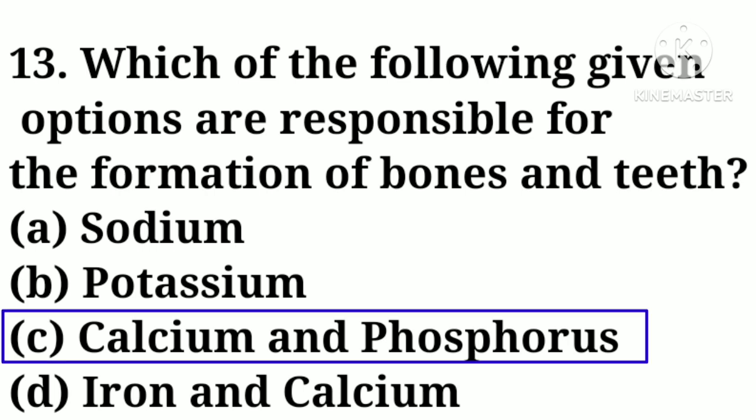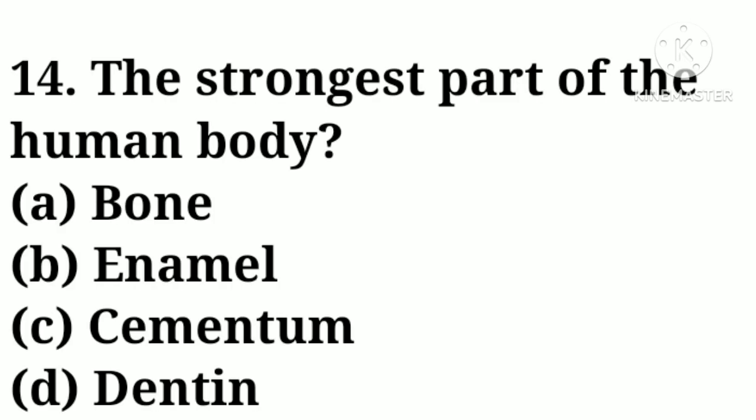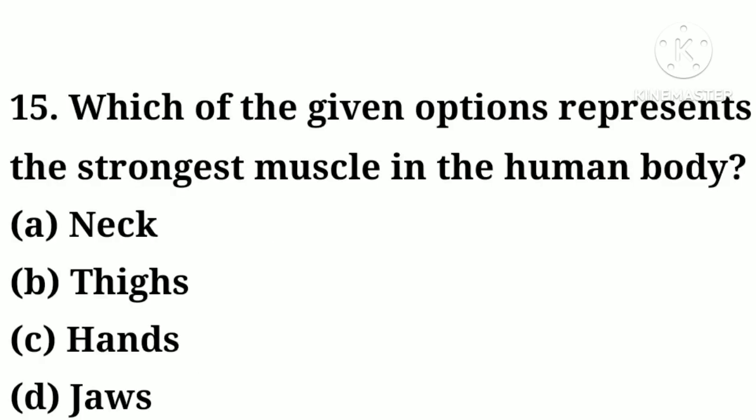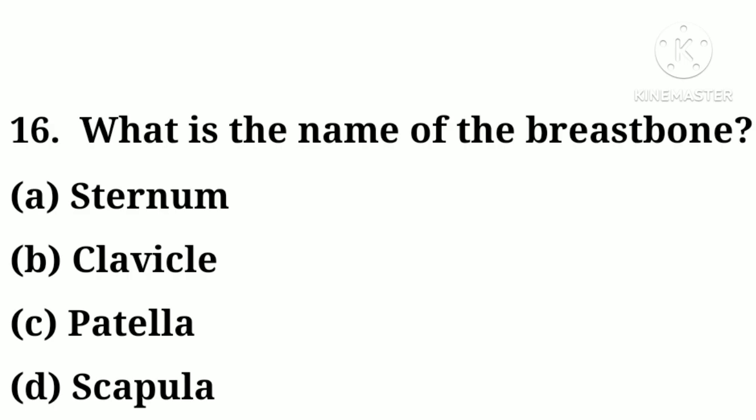Question number fourteen: the strongest part of the human body — option A: bone, option B: enamel, option C: cementum, option D: dentin. Correct answer: option B, enamel. Question number fifteen: which of the given options represents the strongest muscle in the human body — option A: neck, option B: thighs, option C: hands, option D: jaw. Correct answer: option D, jaw.